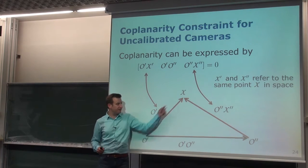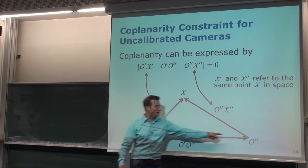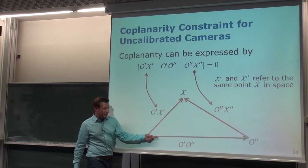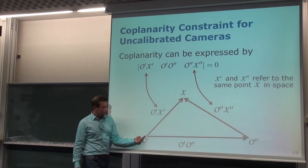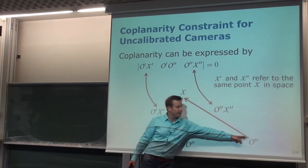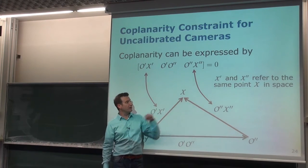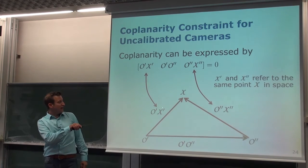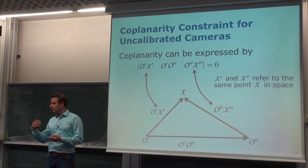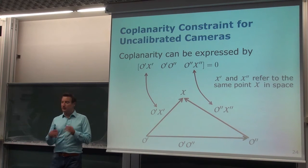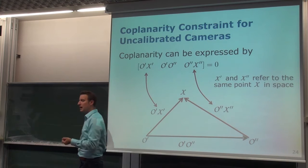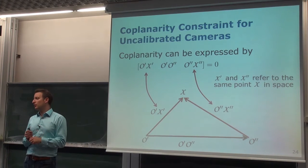We have this triangle: one vector describes how we move from the projection center of the first camera to the second camera. Another vector goes from the projection center of the first camera to the point in the scene, and the corresponding vector goes to the same point in the second image — expressed as x prime and x double prime, once the point seen in image one and once in image two. In a perfect world, x prime and x double prime refer to the same 3D point x if the correspondences are correct.